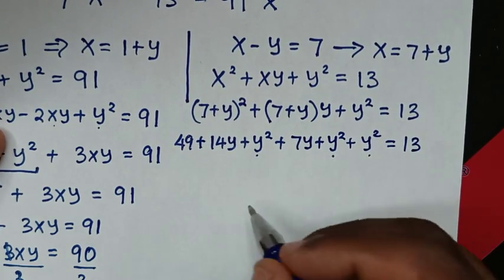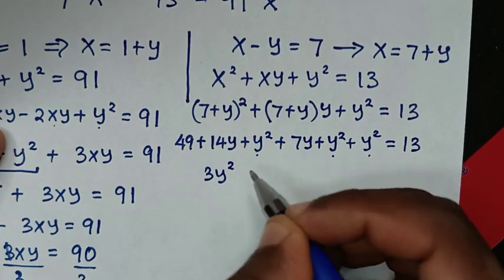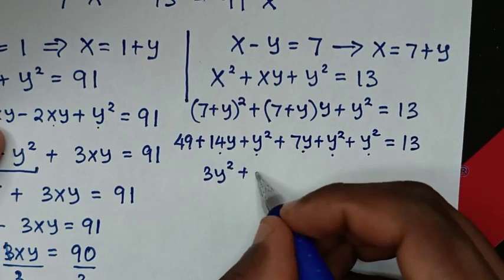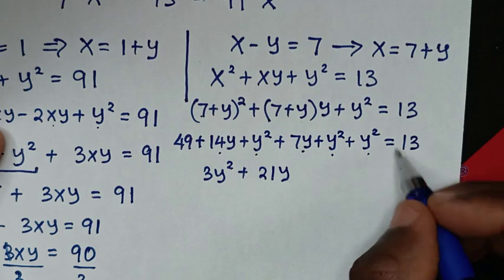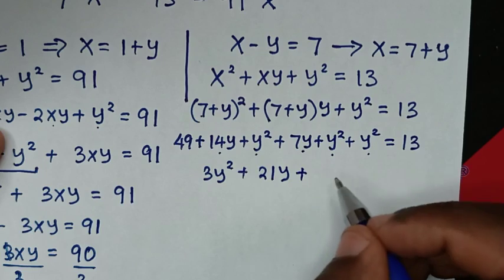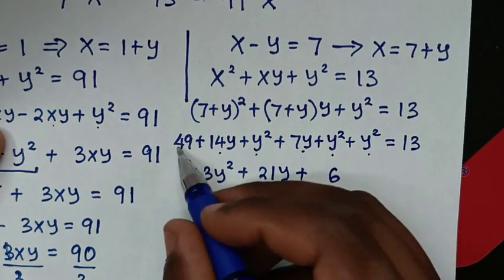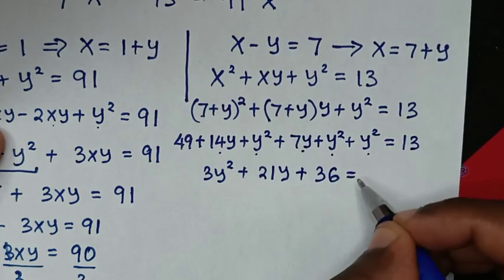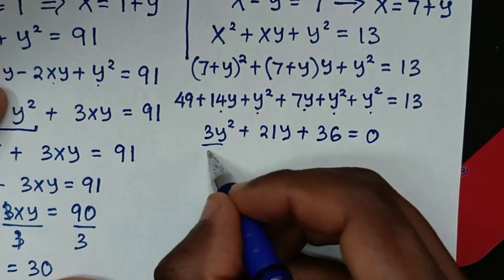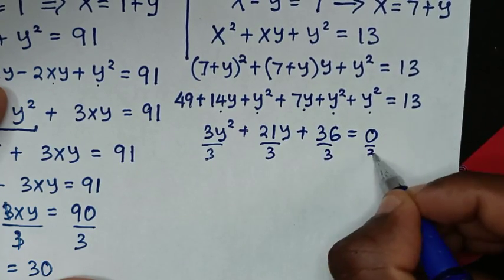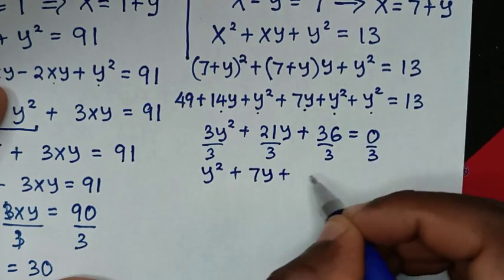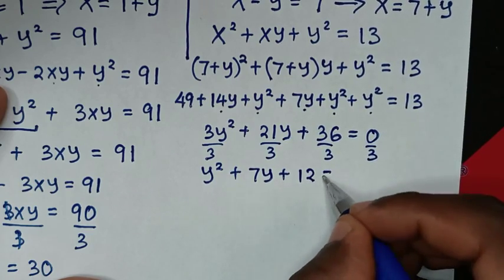Combining like terms: 3y square plus 21y plus 49 minus 13 equals 0, giving 3y square plus 21y plus 36 equals 0. This quadratic is divisible by 3, so dividing gives y square plus 7y plus 12 equals 0.